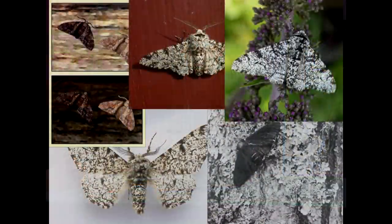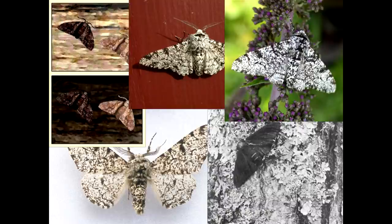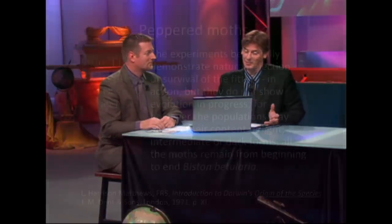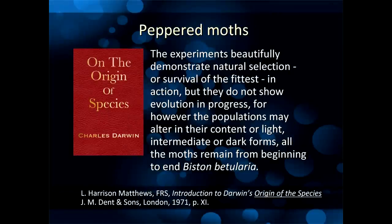All natural selection shows is that you started off with moths — some very light, some medium colored, some very dark — and ended up with more dark or more light colored moths depending on conditions. There's no new information. It's not just creationists saying this. L. Harrison Matthews, a biologist so distinguished he was asked to write the foreword of the 1971 edition of Darwin's Origin of Species, said: 'The experiments beautifully demonstrate natural selection or survival of the fittest in action, but they do not show evolution in progress. For however the populations may alter in their content of light, intermediate, or dark forms, all the moths remain from beginning to end Biston betularia.' — the Latin name for peppered moths.